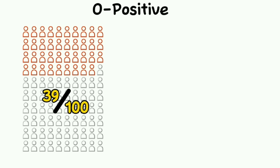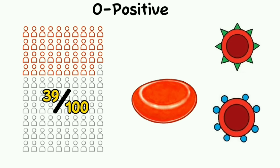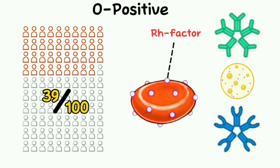O positive is the most common blood group. About 39% of the US population has this blood type. Having this type means you don't have A or B antigens on your red cells of blood, but you do have A and B antibodies in your plasma and RH antigen on red blood cells.